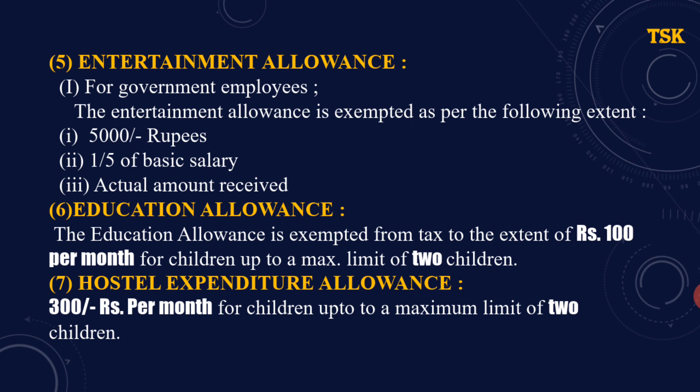Sixth is education allowance. The education allowance is exempted from tax to the extent of ₹100 per month per child, for a maximum of two children. अगर किसी employee के तीन children हों, तो भी allowance सिर्फ दो children के लिए मिलेगा — ₹100 per month, यानी ₹1,200 per annum। Seventh is hostel expenditure allowance — ₹300 per month per child, with a maximum limit of two children।